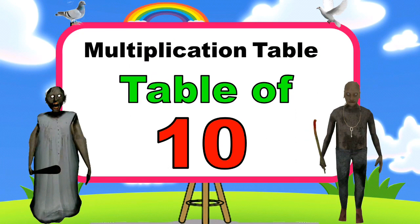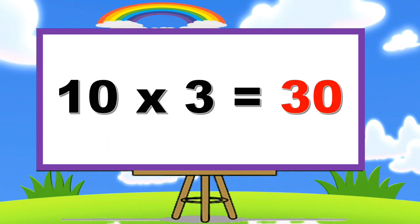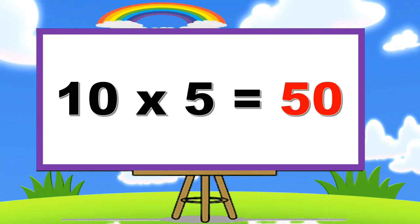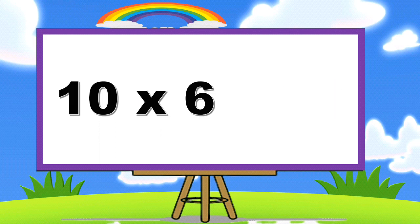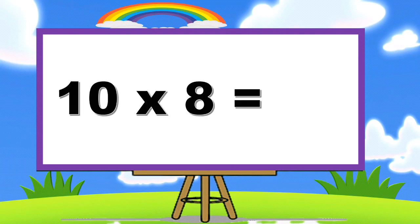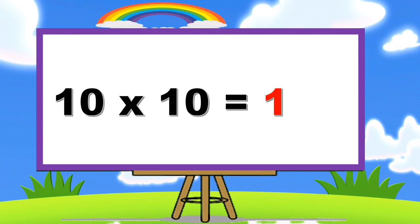Table of Ten. Ten ones are ten, ten twos are twenty, ten threes are thirty, ten fours are forty, ten fives are fifty, ten sixes are sixty, ten sevens are seventy, ten eights are eighty, ten nines are ninety, ten tens are one hundred.